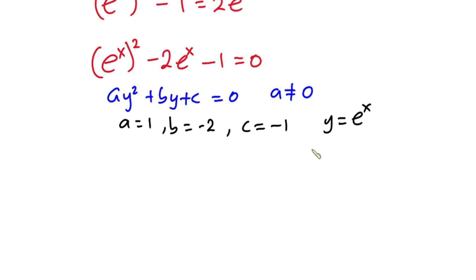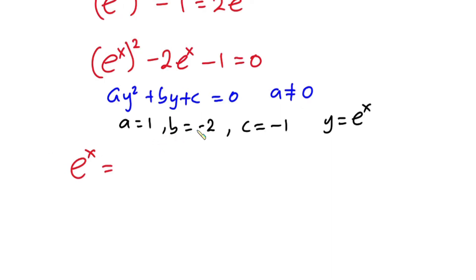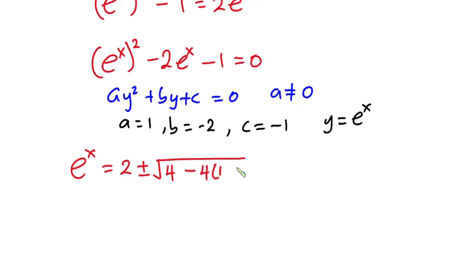Now let's plug these values into the quadratic formula. So we have e to the power x is equal to negative b — but b is negative 2, so we have positive 2 — plus or minus the square root of b squared, which is negative 2 squared, giving 4, then minus 4 times 1 times negative 1, all divided by 2 times a, which is 1, giving 2.